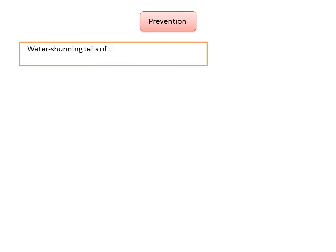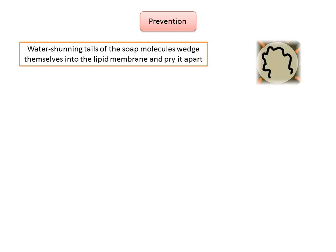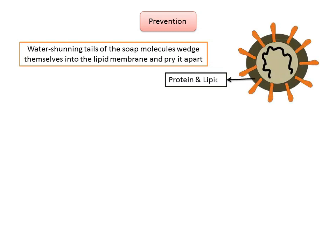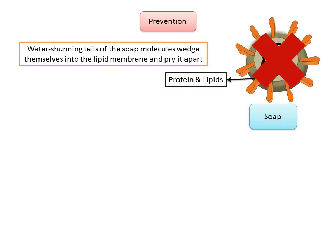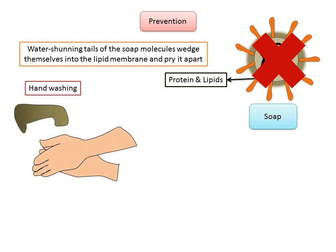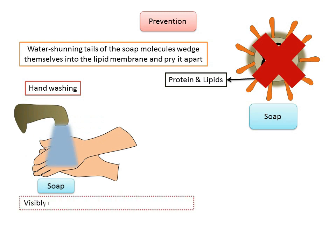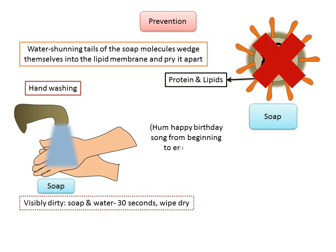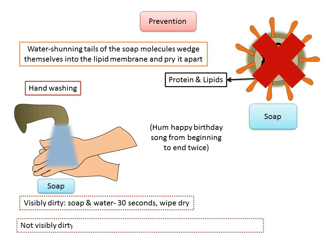How do we prevent ourselves from acquiring the infection? Soap destroys the virus when the water-shunning tails of the soap molecules wedge themselves into the lipid membrane and pry it apart. The virus consists of an envelope of lipids and proteins, which is disintegrated when it comes in contact with soap. So the best way to avoid getting infected is to wash your hands with soap and water. When hands are visibly dirty, wash hands with soap and water for at least 30 seconds under running water, then wipe dry. You can hum the happy birthday song from beginning to end twice to time 30 seconds. When hands are not visibly dirty, use an alcohol-based hand rub for about 20 seconds or wash with soap and water.